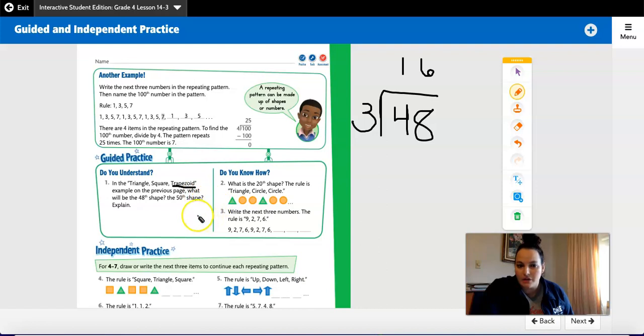Now I know that 50 is two more than 48. So I'm just going to count two more shapes in my pattern. So 48 would be a trapezoid, then I would start over with a triangle, and then I would have a square. So your 48th shape is a trapezoid, your 49th shape is a triangle, and your 50th shape is a square.